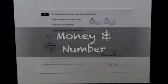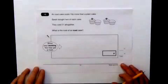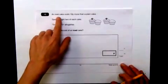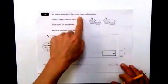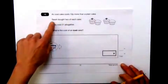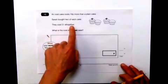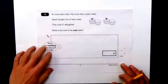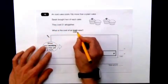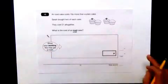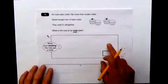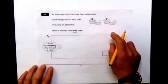Let's have a go at this question, remembering again to read what it says, what it's asking for. An iced cake costs 10p more than a plain cake. Sarah bought two of each, and here they are. They cost £1 altogether. What is the cost of an iced cake? Not the whole lot, an iced cake.